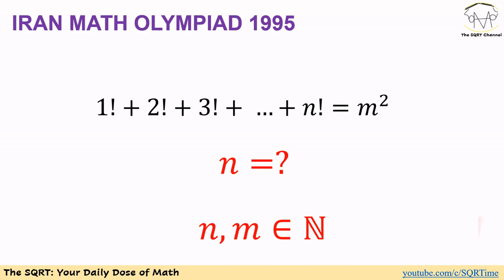Hello everyone, welcome to the security channel. In this video we are going to talk about a problem from the Iran Math Olympiad from 1995. In this problem, 1 factorial plus 2 factorial plus 3 factorial up to n factorial is going to be a perfect square number. We are looking to find the value of n as a natural number.